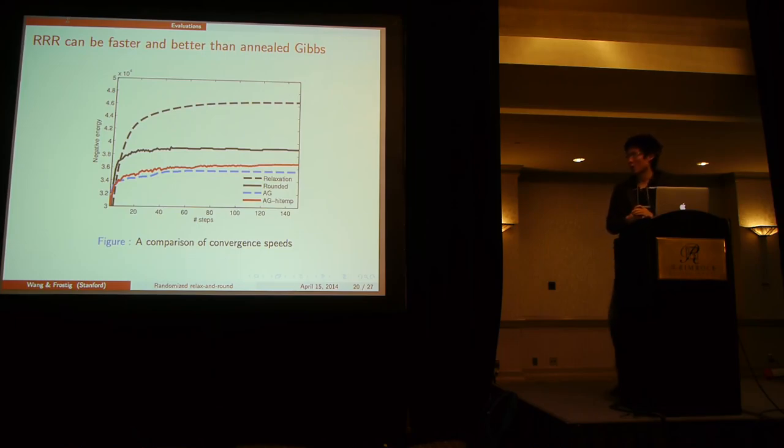So we can look at how it compares to annealed Gibbs in speed and objective. Y-axis is the objective, and the x-axis is the number of steps it takes. Red and blue are two versions of annealed Gibbs, with red having a higher temperature. And the dashed line is the relaxed objective before rounding. So you can see the rounded objective converges to a better value perhaps slightly faster.